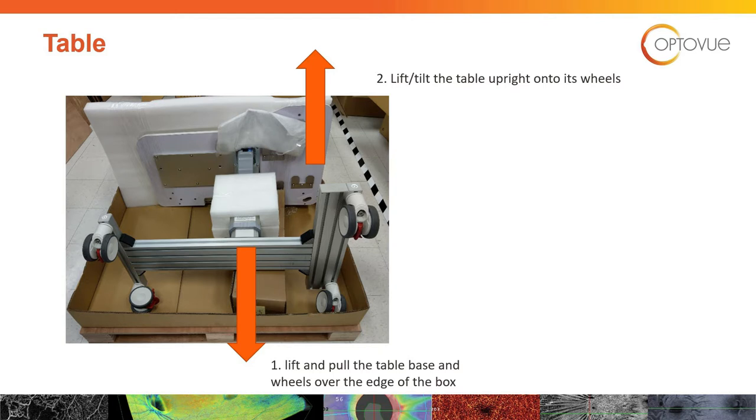To get the table out of the skid, lift the wheel portion over the lip of the box, pulling it towards you. Place the wheels on the ground and then tip the table upright.